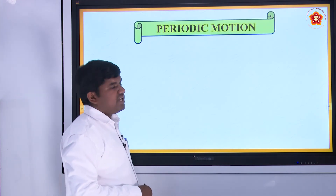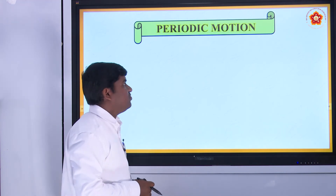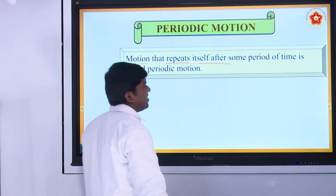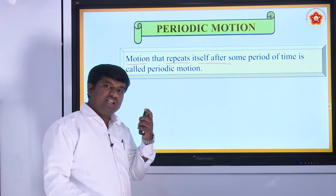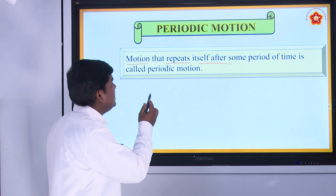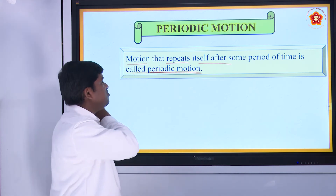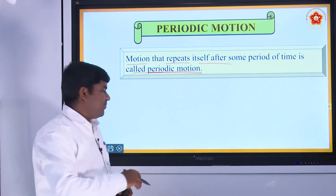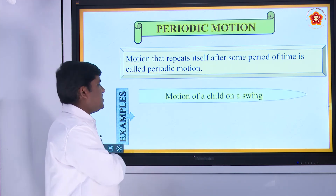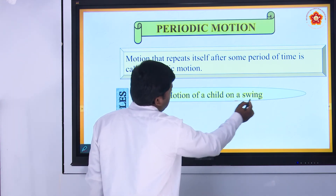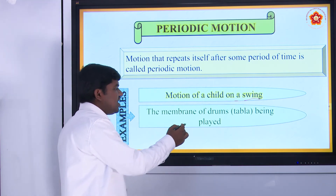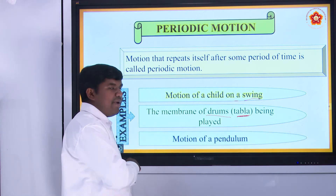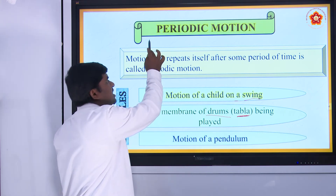Next, the third one: periodic motion. What is meant by periodic motion? Periodic motion means motion that repeats itself after some period of time. After some period of time, the motion repeats again. This type of motion is called periodic motion. Examples: motion of a child on a swing, the membrane of a drum or tabla being played, and motion of a pendulum — these are all examples of periodic motion.